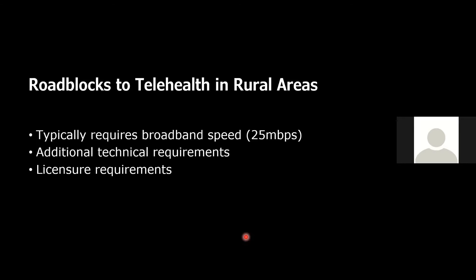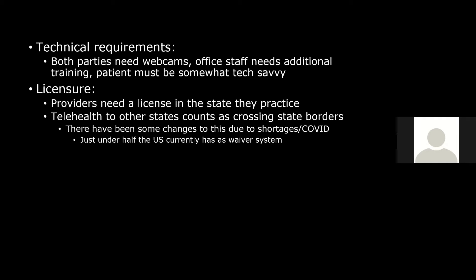Roadblocks to telehealth in rural areas: telehealth typically requires broadband speeds, defined by the FCC as 25 megabytes per second for download and 3 megabytes per second for upload — generally what's needed for a stable video connection. There are also technical requirements: both parties need webcams. You can do telehealth without webcams, but it makes it harder — for example, when we walk into a room we assess whether the patient appears sick. You can't really do that without a webcam. And webcams cost money.